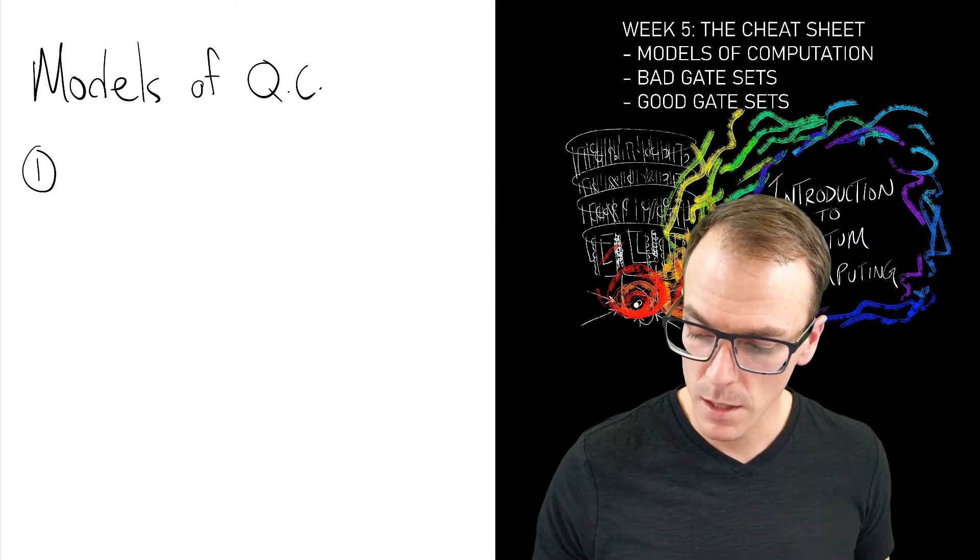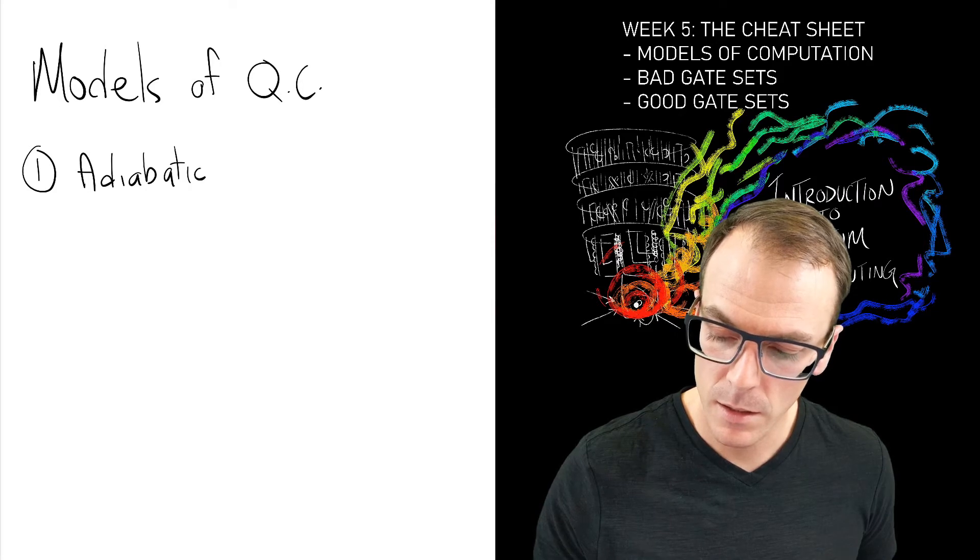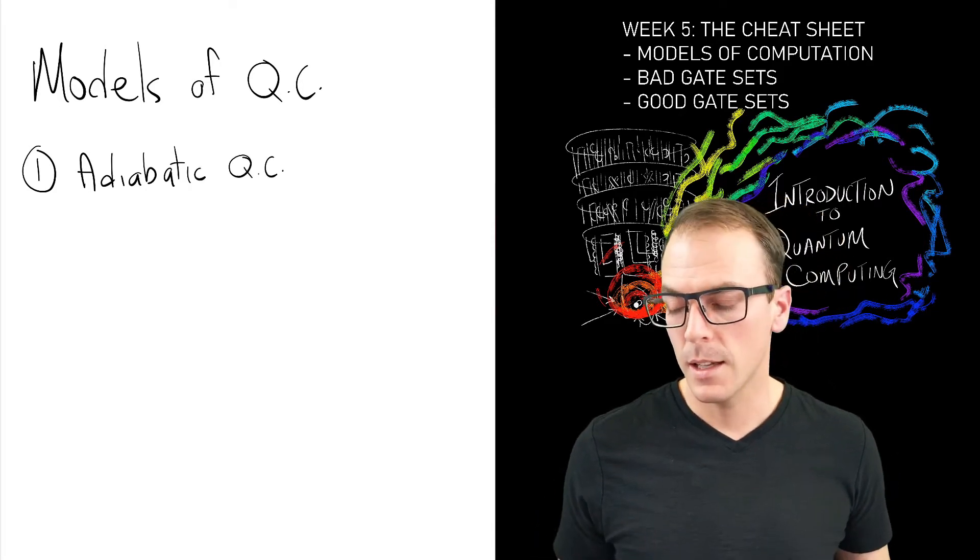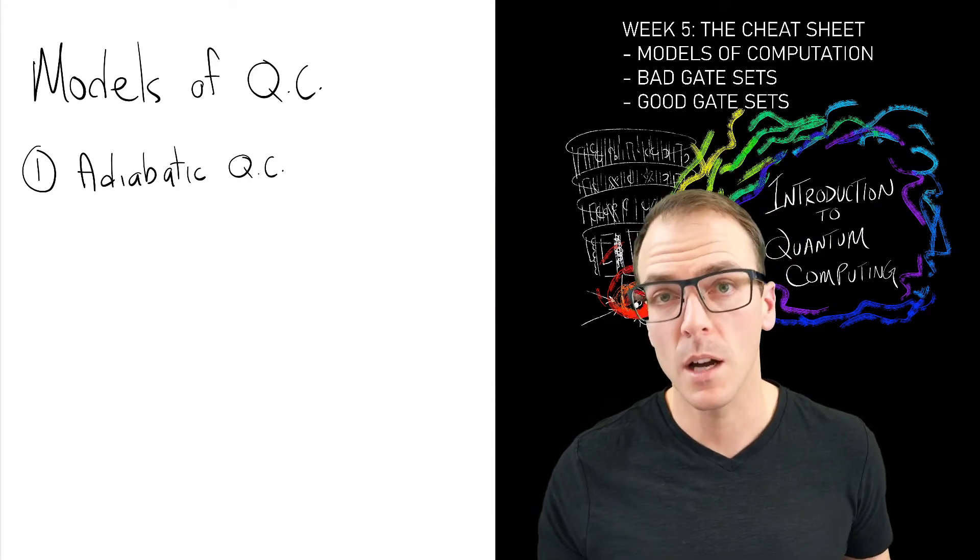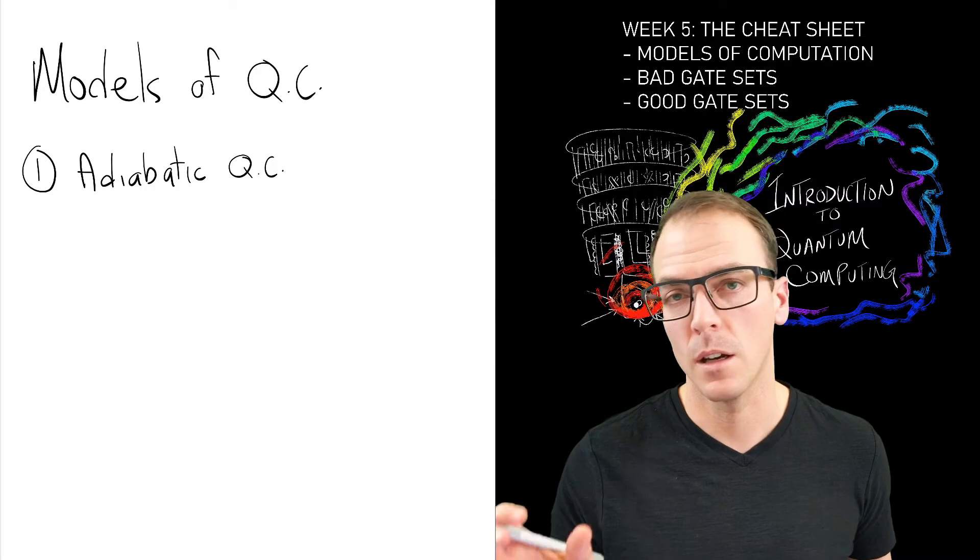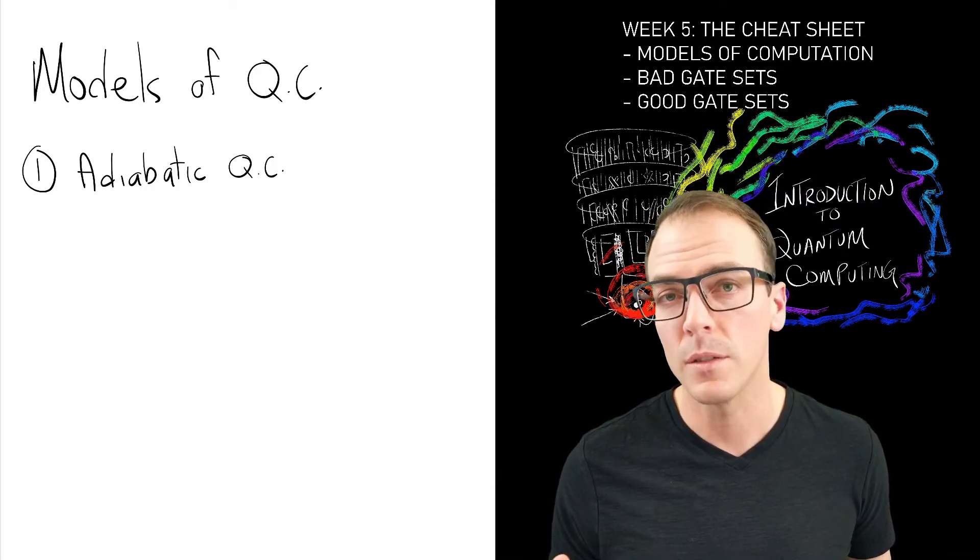The first is called adiabatic quantum computation, and it's an analog model of quantum computation which means it's in continuous time rather than according to these discrete gates that we've been thinking about in previous weeks.